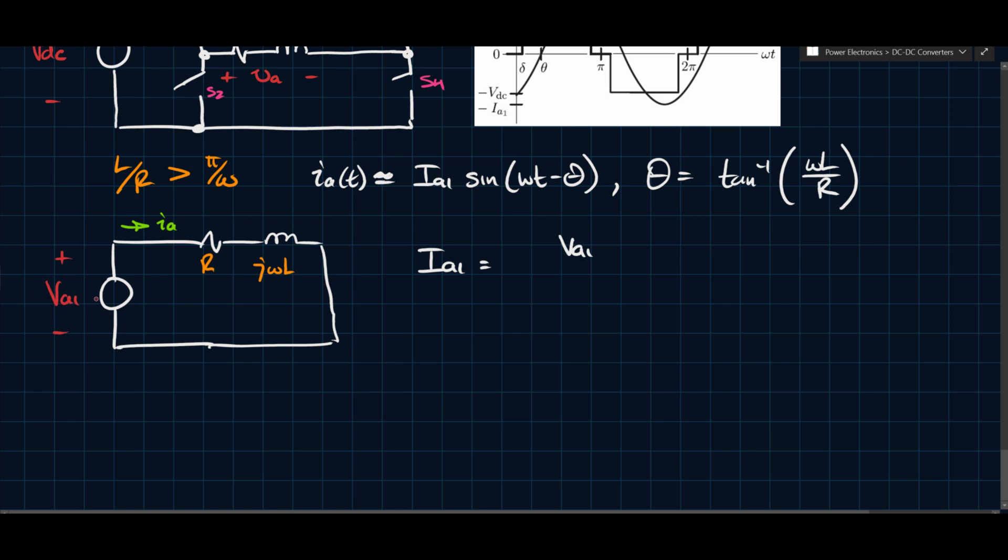Maybe we can rewrite this. It's probably more accurate to rewrite this as the amplitude since we're considering amplitudes. So let's say VA1, and then we can call this IA1. So this is going to be VA1 over the total magnitude of this impedance, which is R squared plus omega L squared under the root. And so that's how the amplitude is modeled in this case.